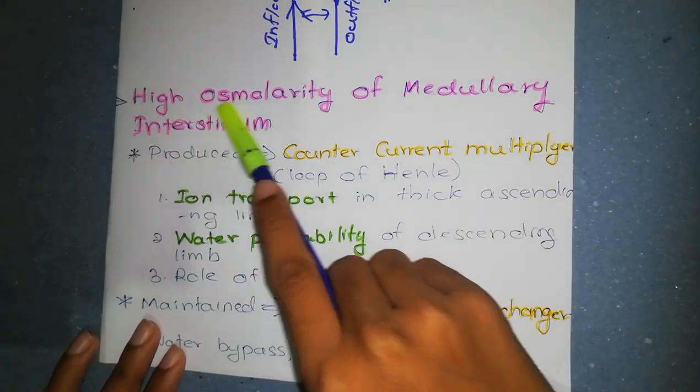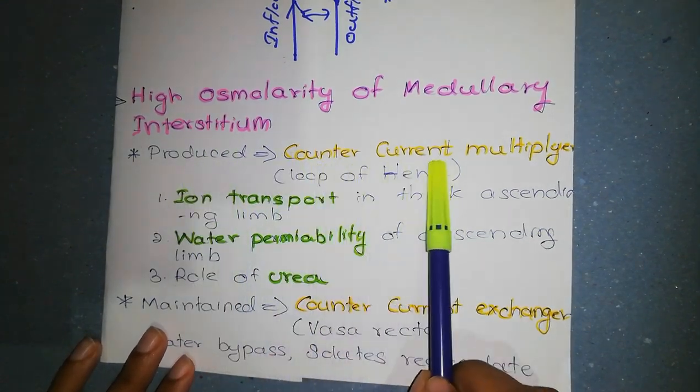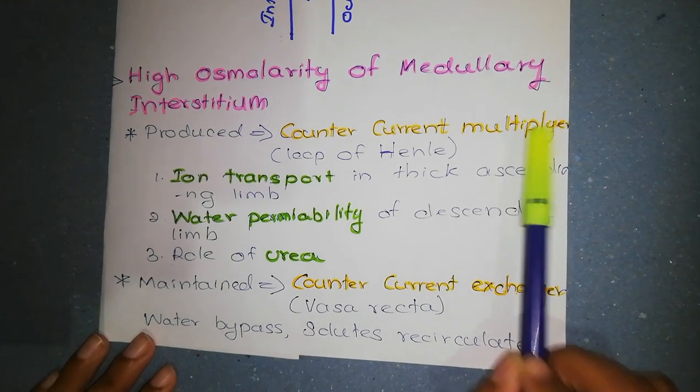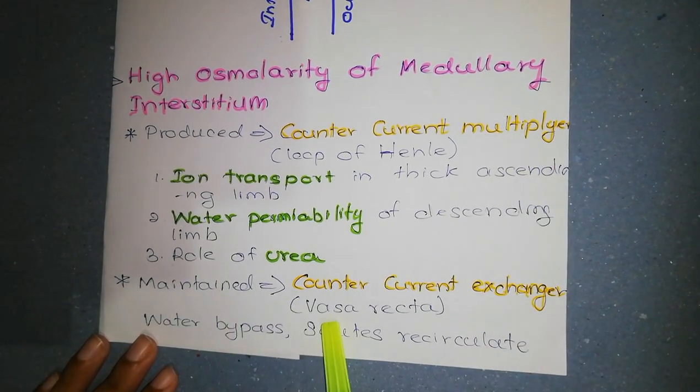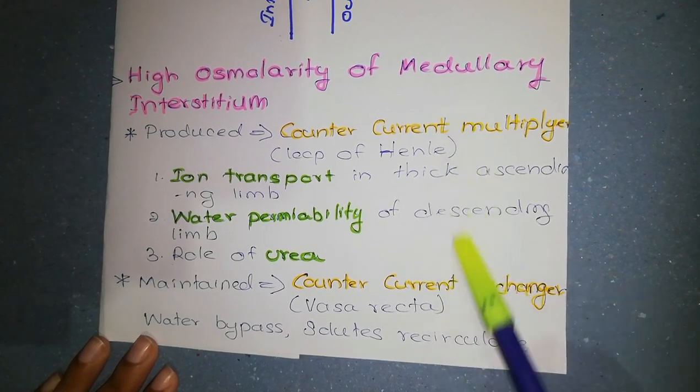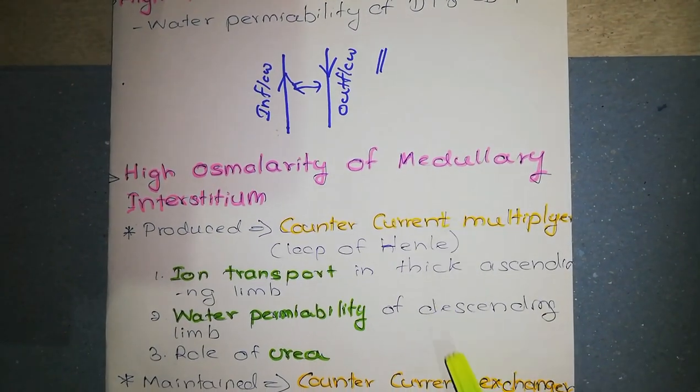Hyperosmolarity of medullary interstitium is produced by operation of loop of Henle as a counter current multiplier and maintained by the operation of vasa recta as counter current exchangers. Both of them are called as counter current mechanism. Today our topic is the counter current mechanism.